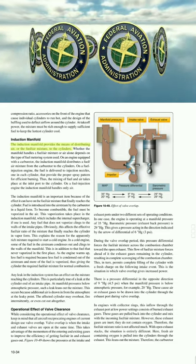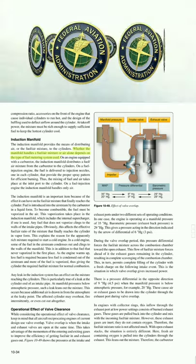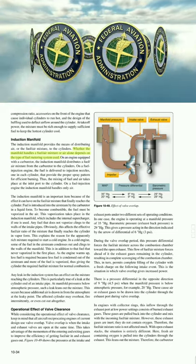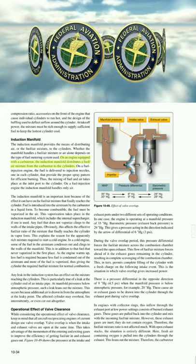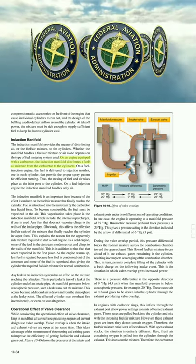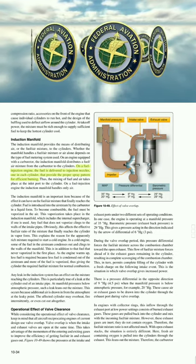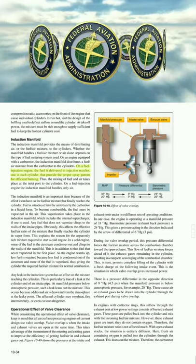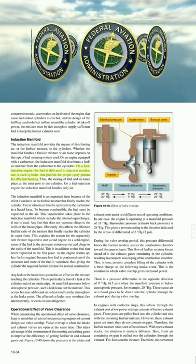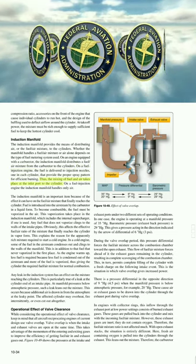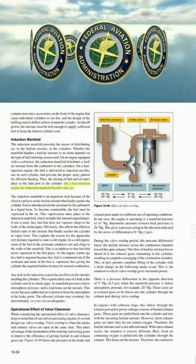The induction manifold provides the means of distributing air or the fuel/air mixture to the cylinders. On an engine equipped with a carburetor, the induction manifold distributes a fuel/air mixture from the carburetor to the cylinders. On a fuel injection engine, fuel is delivered to injection nozzles — one in each cylinder — providing the proper spray pattern for efficient burning. Thus, the mixing of fuel and air takes place at the inlet port.